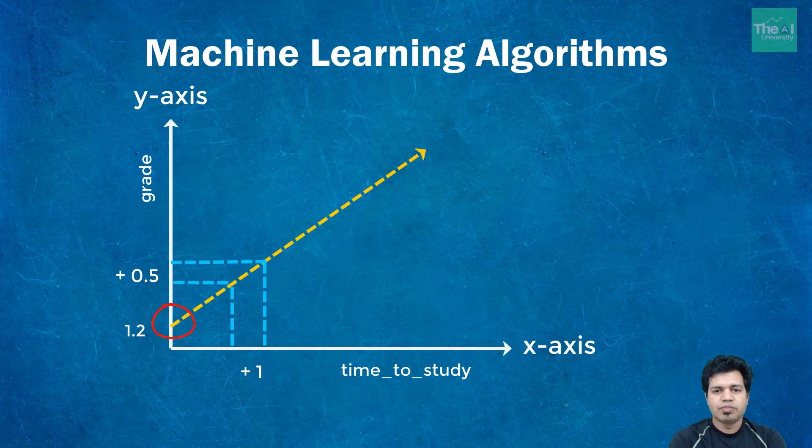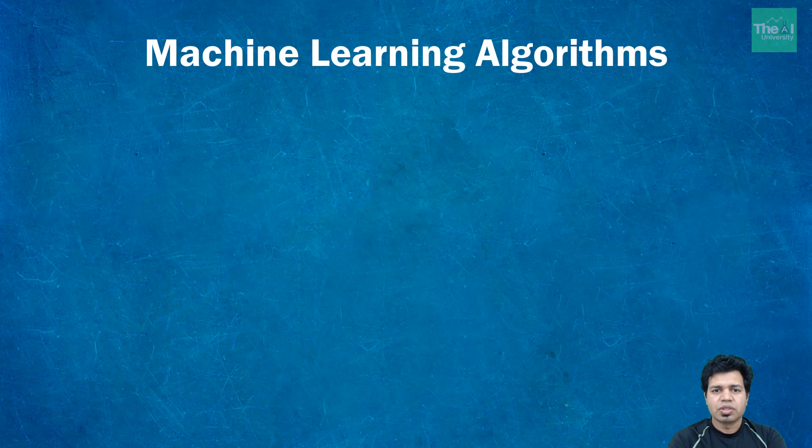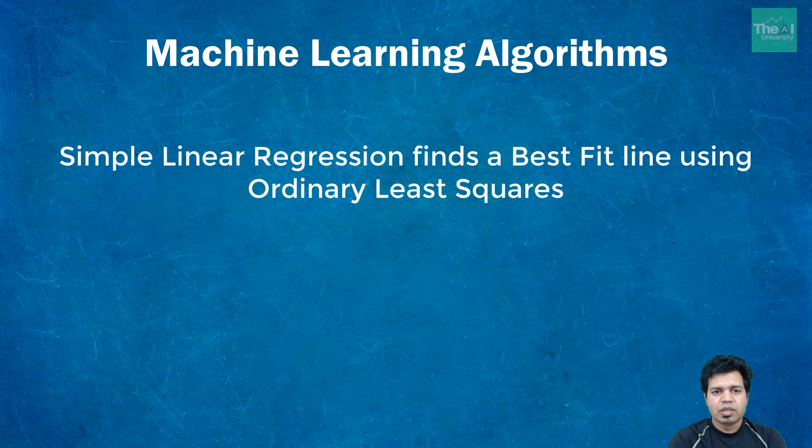Now you might be wondering how simple linear regression finds a best fit line. Well the answer is using ordinary least square method. So let me explain that as well.